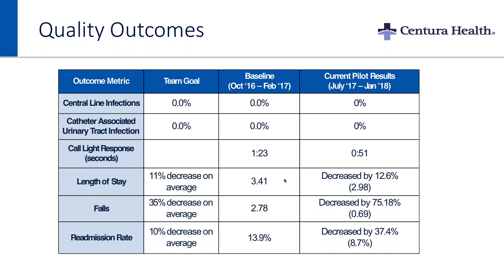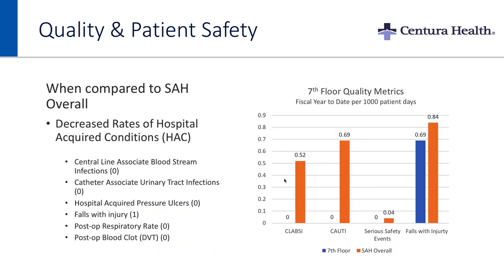Comparing quality metrics — the orange represents our overall hospital numbers for fiscal year-to-date through January. We were doing better than everyone else in the hospital. You can see some of those serious safety events: zero on our unit. It was really remarkable, and our staff are very proud of these results.